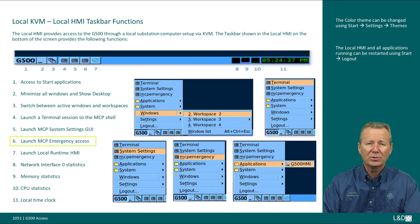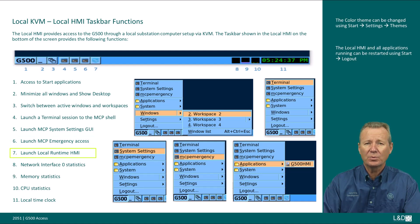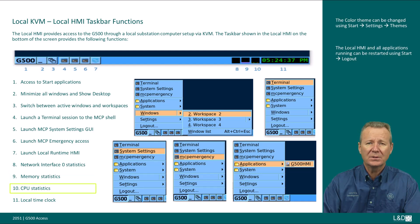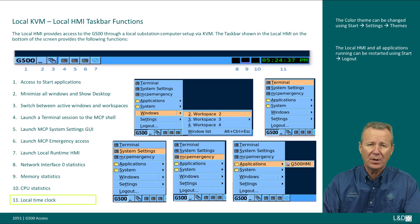Six, launch MCP emergency access — again, you should have only one instance across all workspaces. Seven, launch local runtime HMI, which supports only one instance across all workspaces. Eight, network interface zero statistics. Nine, memory statistics. Ten, CPU statistics. And lastly, eleven, local clock time. Additional information will be shown when hovering the mouse over the statistics and the time clock.